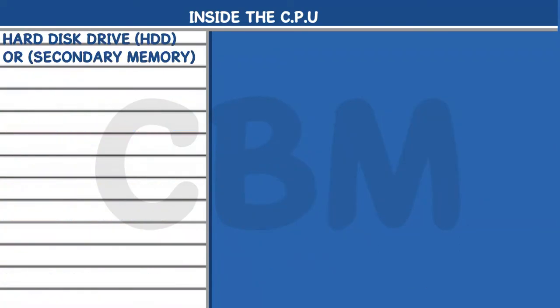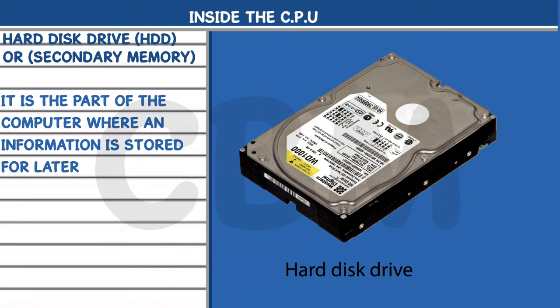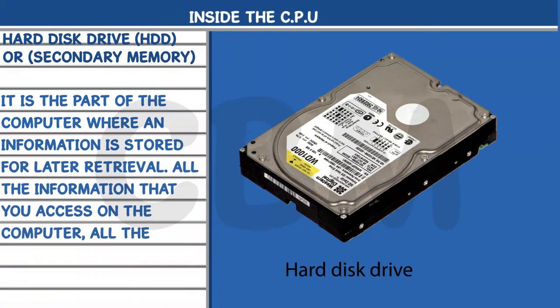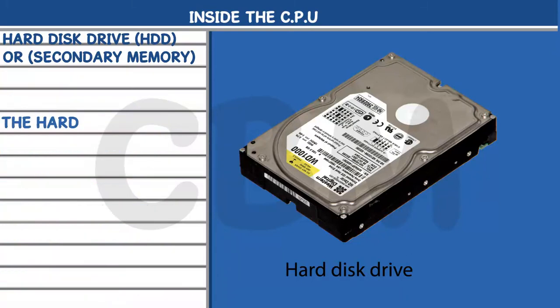Hard Disk Drive (HDD) or Secondary Memory: It is the part of the computer where information is stored for later retrieval. All the information you access on the computer — documents, pictures, email, messages, and programs — are saved in the hard disk drive. Unlike RAM, HDD does not store information temporarily.